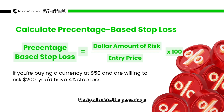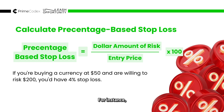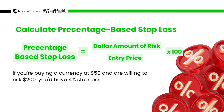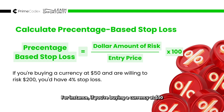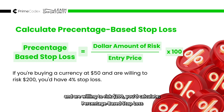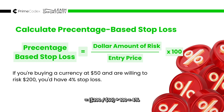Calculate the percentage that the dollar amount of risk represents relative to the entry price. For instance, if you're buying a currency at $50 and are willing to risk $200, you'll calculate the percentage-based stop loss as: dollar amount of risk divided by entry price, multiplied by 100. For instance, using $200 divided by $50 multiplied by 100, that gives a 4% stop loss.